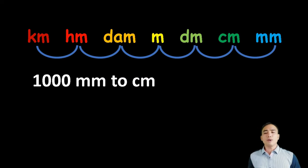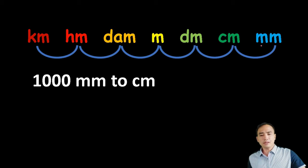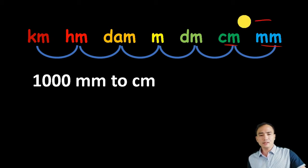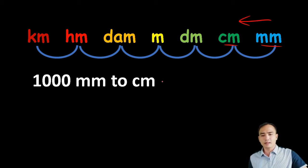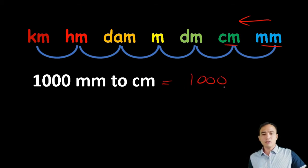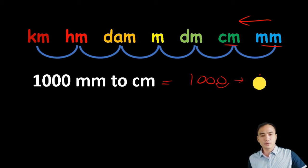Convert 1,000 millimeters to centimeters. From millimeters going to centimeters is one step going to the left. The decimal point of 1,000 is on the right, so we move it one place to the left. Therefore, the answer is 100 centimeters.